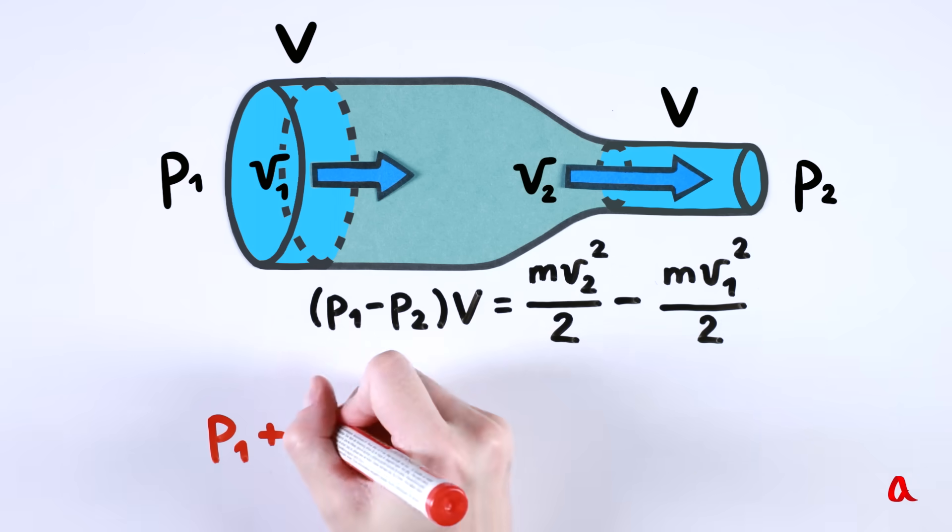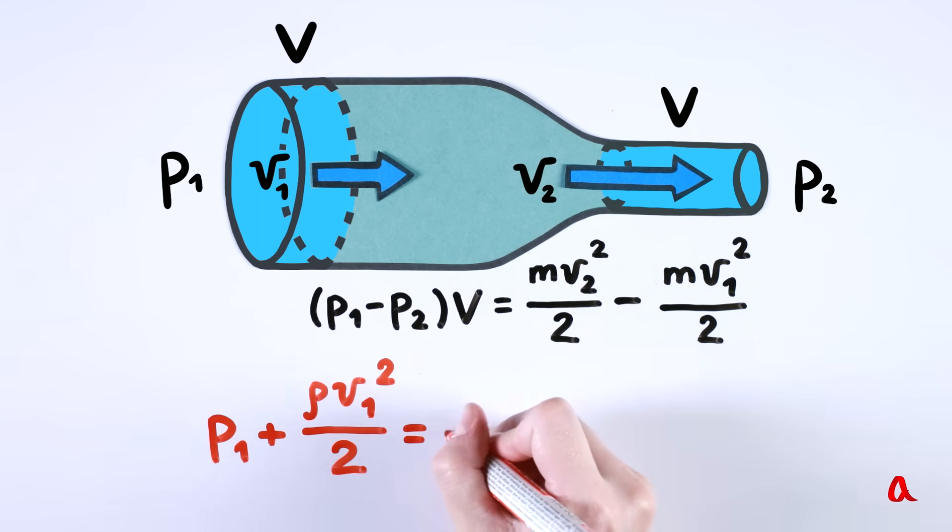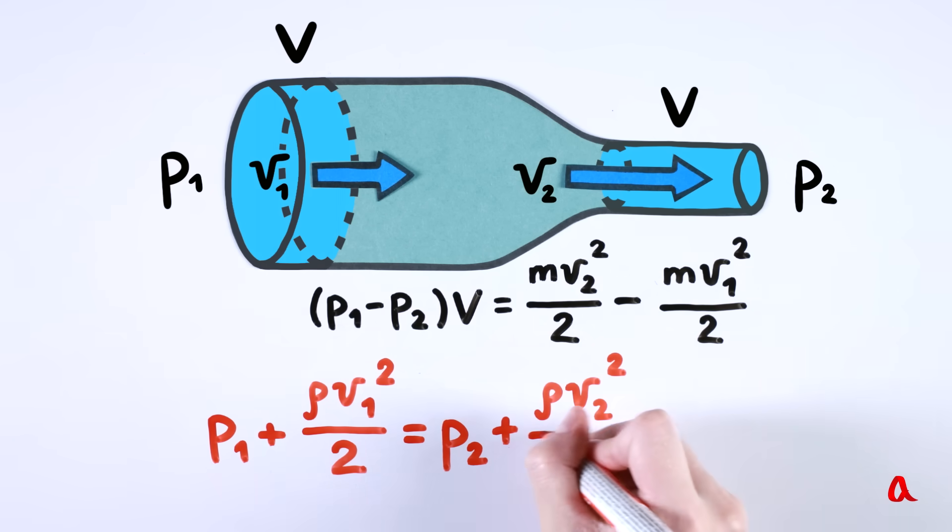The value of rho V square divided by 2 is called the velocity head of a fluid. According to Bernoulli's principle, the sum of pressure and velocity head in an ideal fluid remains constant throughout the whole pipe.